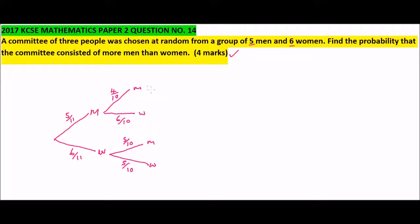In the third round, the committee is to be made of 3 people, so we could choose a man or a woman. If we chose a man twice earlier, the men reduce to 3, so the probability of choosing a man is 3/9. We have not chosen any woman in this branch, so women remain 6, giving a probability of 6/9.